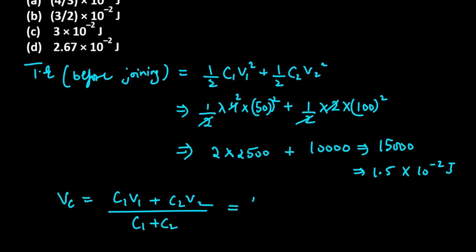C1 V1, that is 4, V1 is 50, plus you have C2 value, it is 2, and V2, which is 100, divided by C1 plus C2, which will be 6. You have to calculate, so 66.67 V. Now what do we do next?